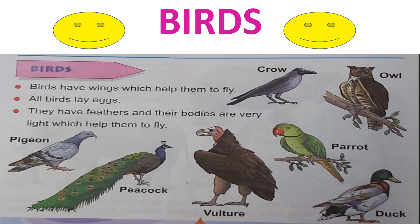Characteristics of birds: birds have wings which help them to fly. All birds lay eggs. They have feathers and their bodies are very light which help them to fly. For example: pigeon, peacock, vulture — ek do example aap ko dene aur yaad pe rakhne hain.